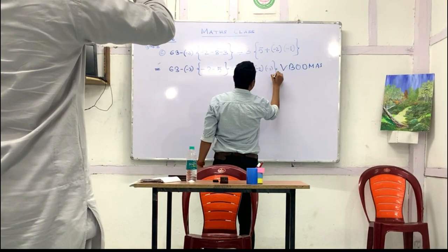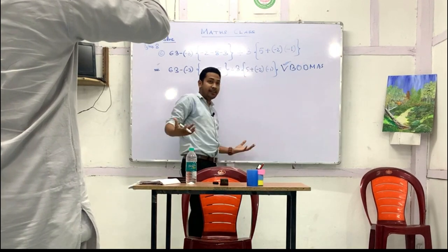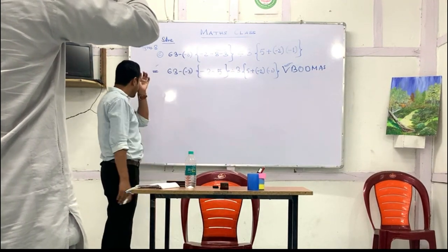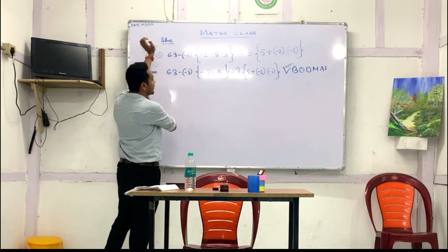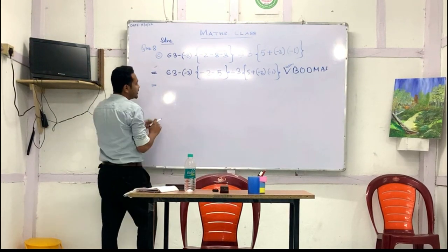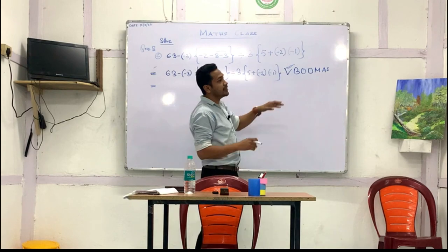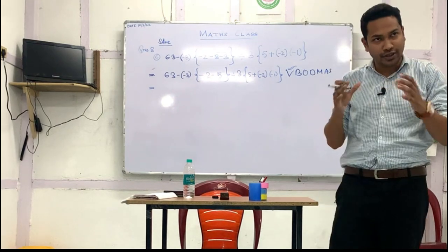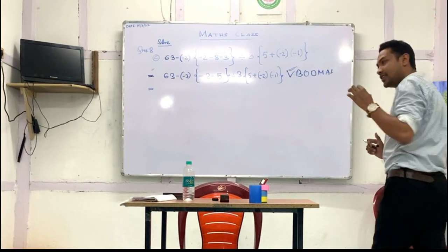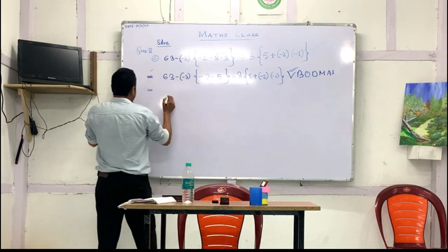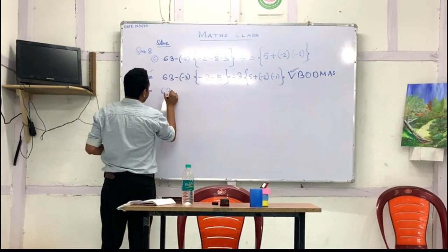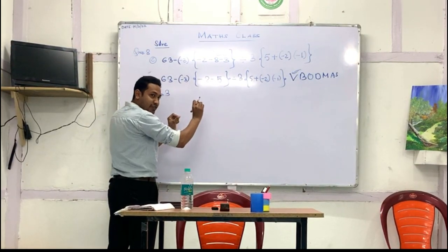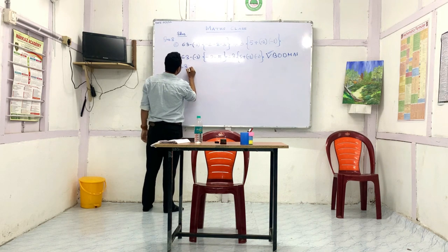Minus one — and now we have solved this Vinculum, right? Yes, sir. Our next step is the bracket. So to solve this bracket, first of all, there are certain types of brackets: first bracket, second bracket, half bracket — we know this, right? Yes, sir. So first of all we will tackle the first bracket. We are writing 63 here as it is.